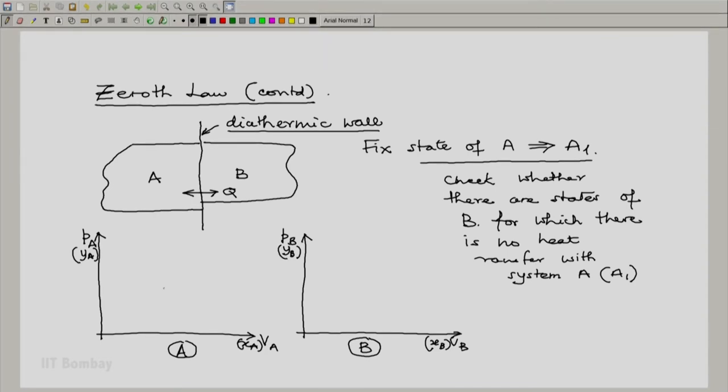Let us say this is our fixed state of system A1. What we do is we experiment with various states of system B, bring those states in contact with the specified state A1 across a diathermic wall.